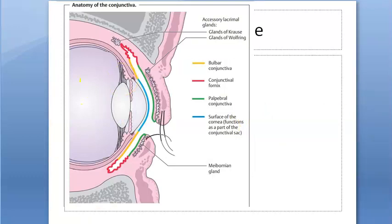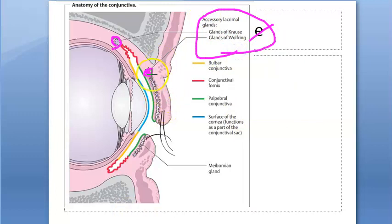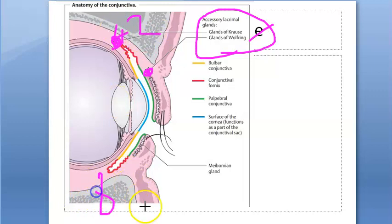Now let's locate these glands on a diagram. Glands of Krause are present in the subconjunctival connective tissue of the fornices — specifically 42 in the upper fornix and 8 in the lower fornix. They have actually counted these glands: 42 in the upper and 8 in the lower fornix.